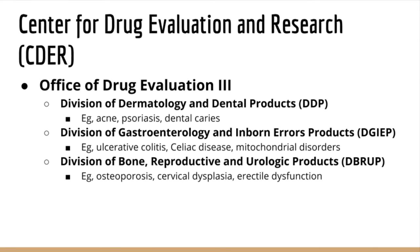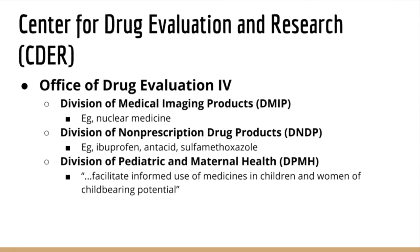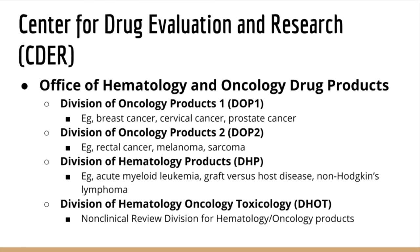In ODE3, we have DDP, DGIP, and DBRAP, which regulate drugs for the treatment of psoriasis, ulcerative colitis, and osteoporosis, respectively. In ODE4, we have DMIP, DNDP, and DPMH, which regulate drugs used in image-based diagnosis and monitoring, over-the-counter drugs, and facilitate quality initiatives for children and women of childbearing potential, respectively. In OHOP, we have DOP1, DOP2, DHP, and DHOT, which regulate drugs for the treatment of various cancers such as breast cancer, melanoma, and leukemia.